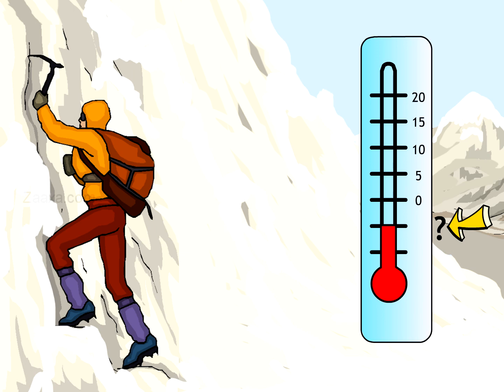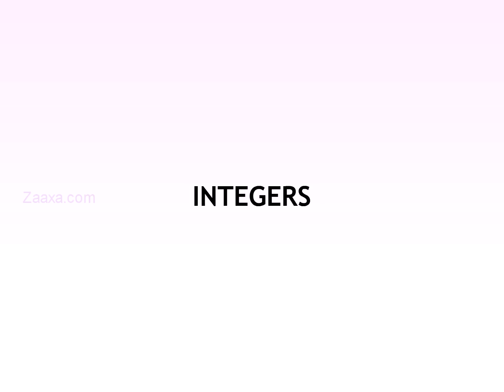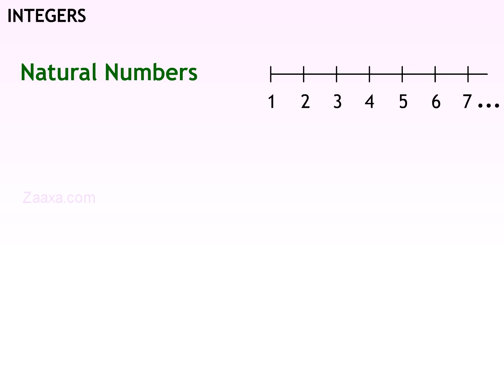In the following session we shall learn about numbers that are less than zero. What are integers? We know that the numbers 1, 2, 3, 4, 5 and so on are the natural numbers.